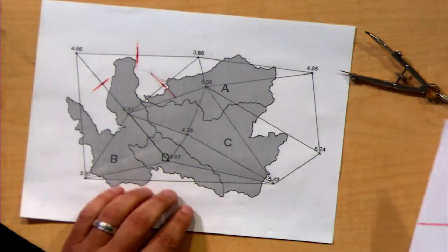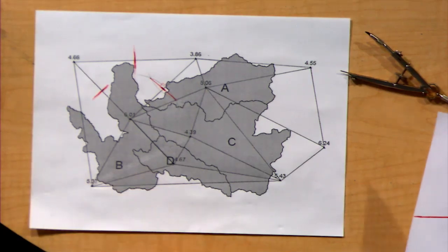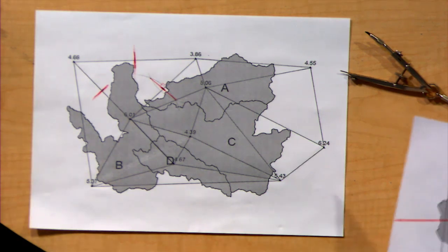So your next step to complete the Thiessen polygon is to find perpendicular bisectors for each of the segments and sketch them in.